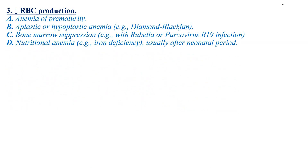The third mechanism is decreased RBC production. This can be due to anemia of prematurity, aplastic or hypoplastic anemia, Diamond-Blackfan syndrome, bone marrow suppression due to different viral infections, or nutritional anemia usually after the neonatal period, such as iron, B12, and folate deficiency.